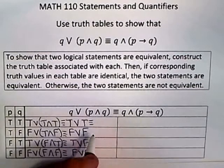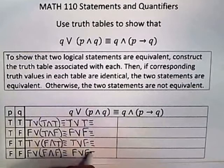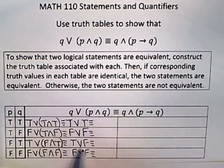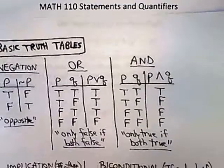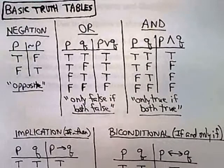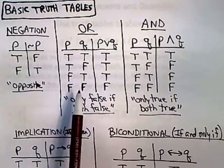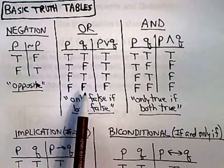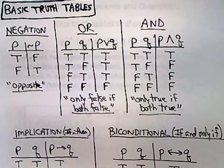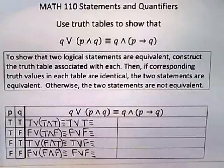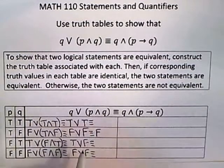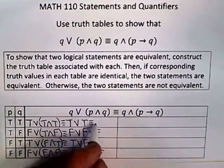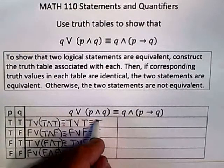One more step should do it on the left. Now I'm doing ORs. The truth table for OR has only one case where it's false: when both pieces are false. Otherwise an OR is true. So looking at these, there are two places where both pieces are false — giving false and false — while the other two cases are true. So the final column for the left-hand side is: true, false, true, false.